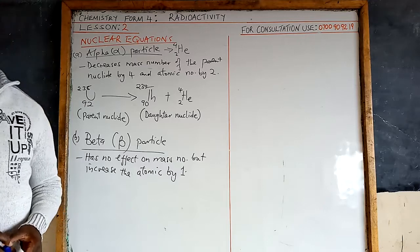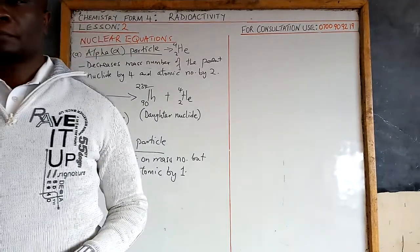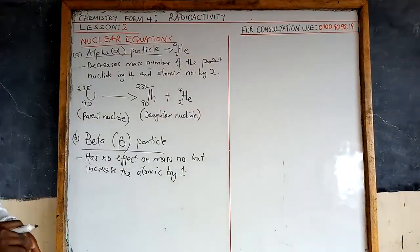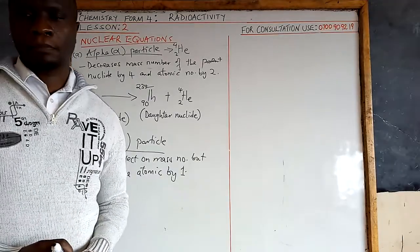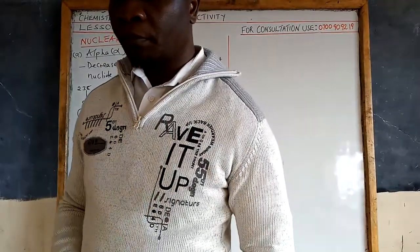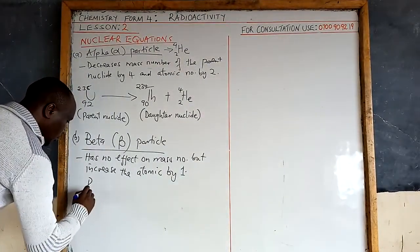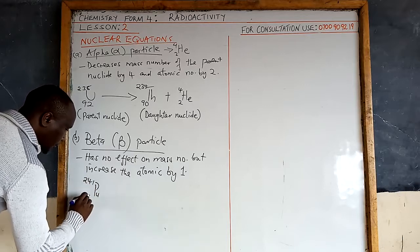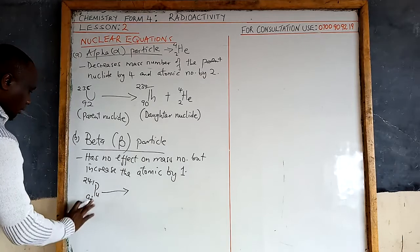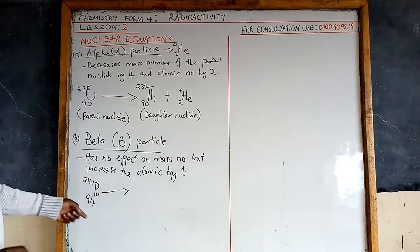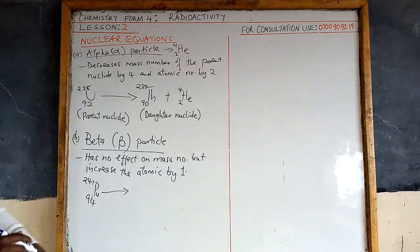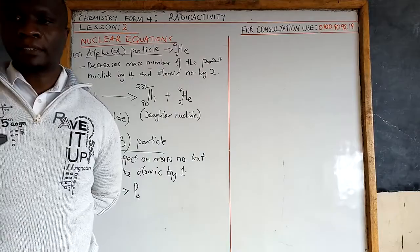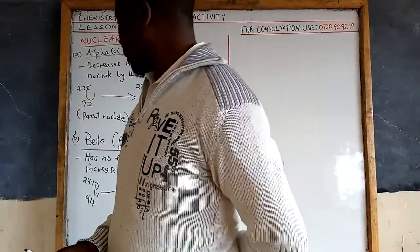Let's consider an equation where a beta particle is emitted. For example, plutonium-241 with atomic number 94 emits a beta particle. Since beta does not affect the mass number, the mass number remains 241. The atomic number increases by one, so the daughter nuclide has atomic number 95, which is americium.